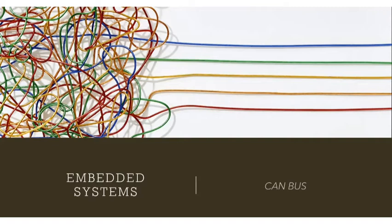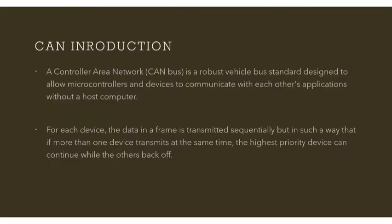CAN stands for Controller Area Network. CAN is best suited for connecting high-speed peripherals or input/output devices, and is mostly used in automobiles. CAN is a robust vehicle bus standard designed to allow microcontrollers and devices to communicate with each other without the intervention of a host computer. For each device, the data frame is transmitted sequentially, but if more than one device is transmitting at the same time, the high-priority device will communicate and others will have to back off.